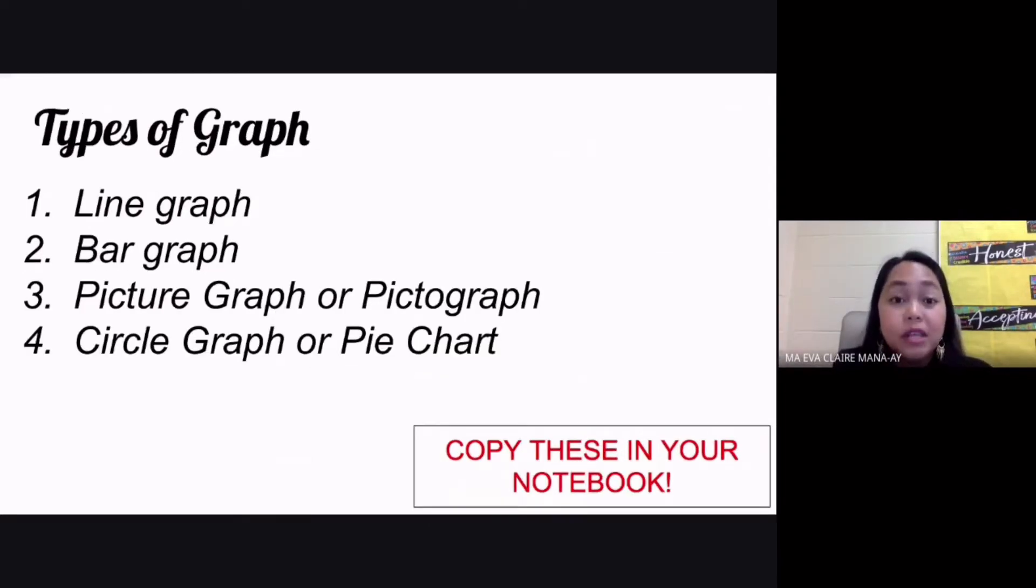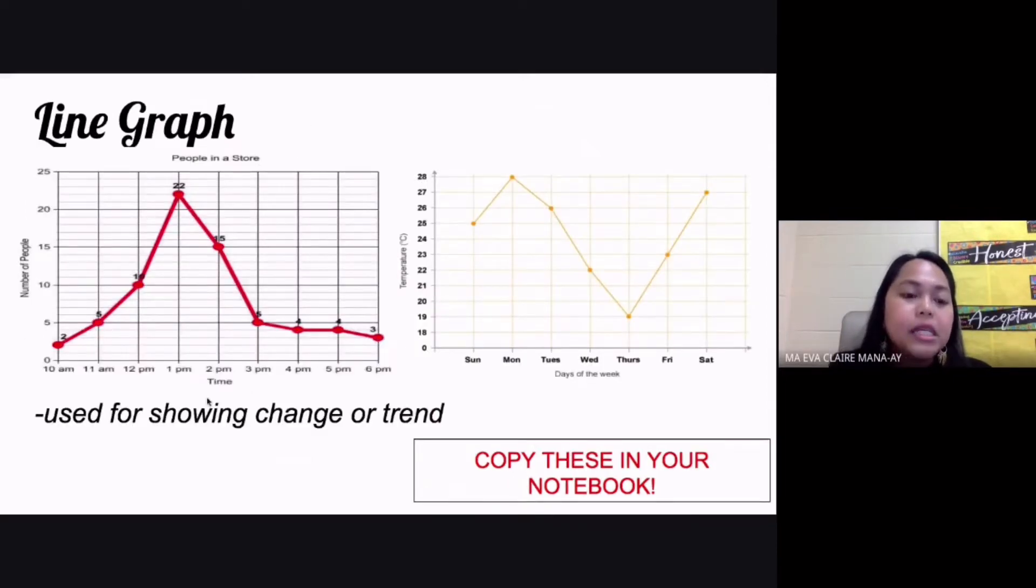Each of these has their own specific use. You have your line graph, the bar graph, pictograph, and the circle graph or pie chart. The line graph is used for showing change or trend over a period of time.